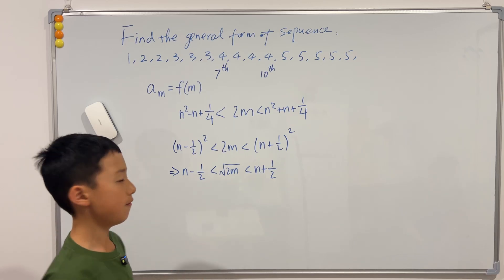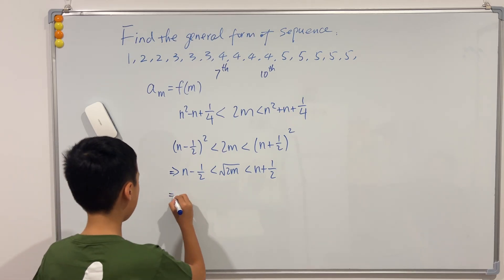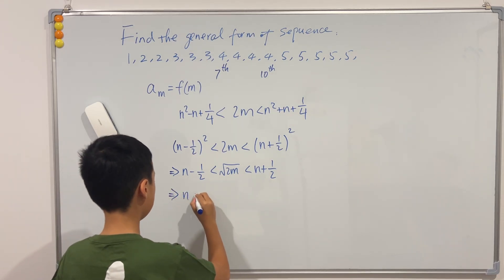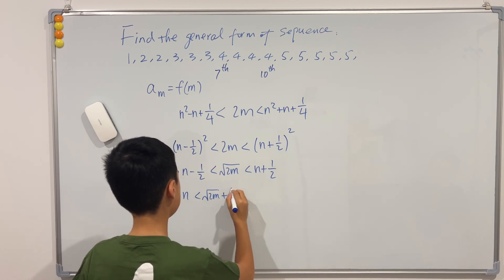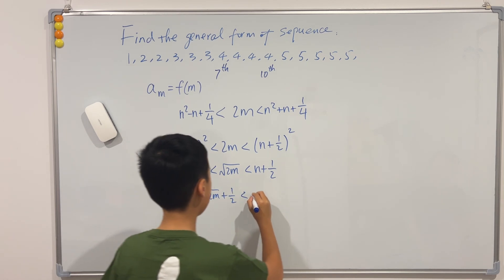And now if we add one half to all the sides, then we have n is less than square root of 2m plus one half is less than n plus one.